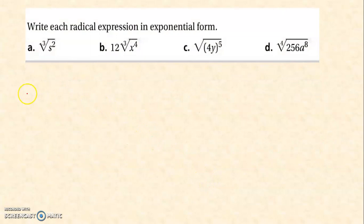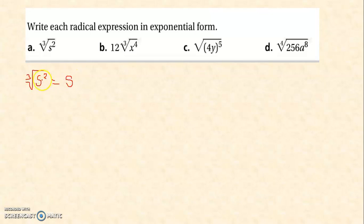Next, we have the cube root of s raised to 2. Your radicand will be your base. The exponent of your radicand is 2, so you're going to write 2 as the numerator. And the index is 3, so 3 will be the denominator. You get s raised to 2 over 3.